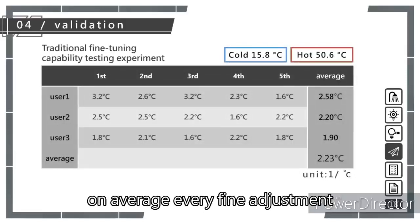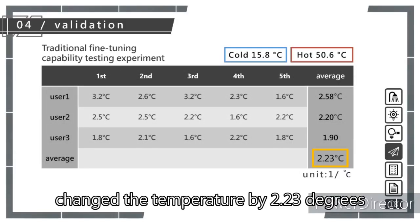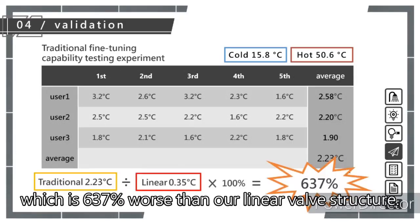The results showed that, on average, every fine adjustment changed the temperature by 2.23 degrees, which is 637% worse than our linear valve structure.